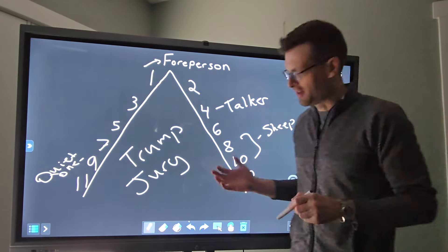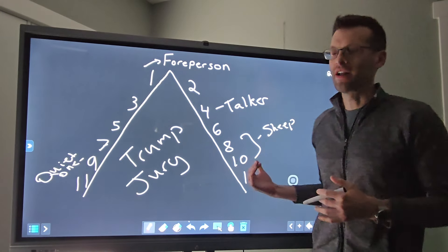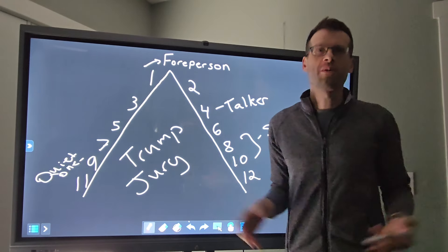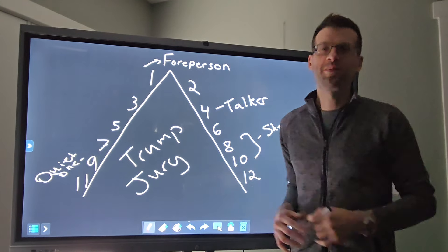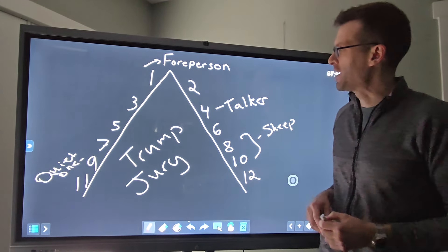And just for fun, we'll call eight and ten the sheep. These are the people that they'll talk and contribute, but they'll generally just go along with what the group is doing. They want to get out of there, it's going to be Friday soon, the weekend. These people just want to go home.